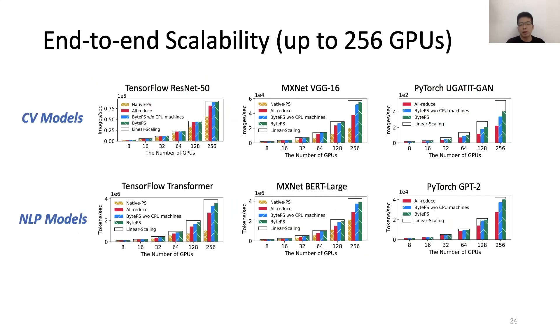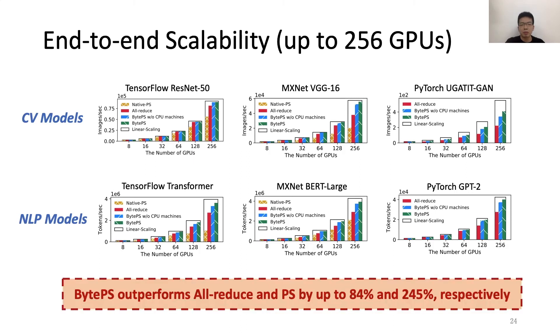Finally, we evaluate the end-to-end scalability with up to 256 GPUs. We use different CV and NLP models implemented in TensorFlow, MXNet, and PyTorch. For each model, we run the experiments using 8 to 256 GPUs. And the results show that BytePS has gain for all cases. The more GPUs we use, the higher gain we will get. In summary, BytePS can outperform all-reduce and PS by up to 84% and 245% respectively.